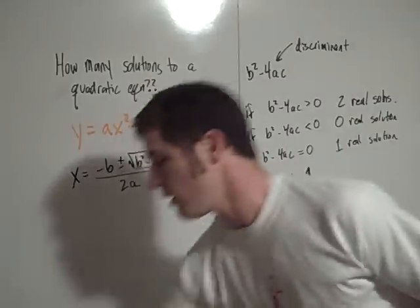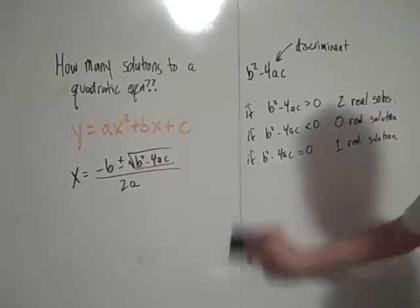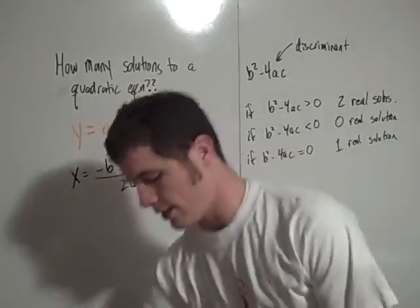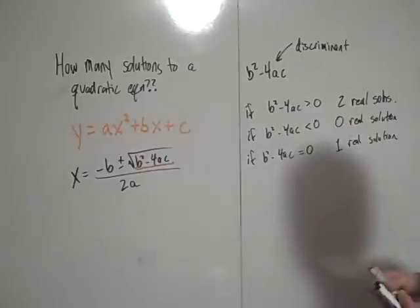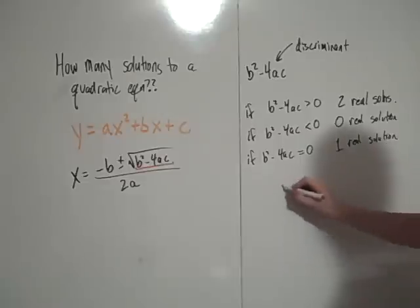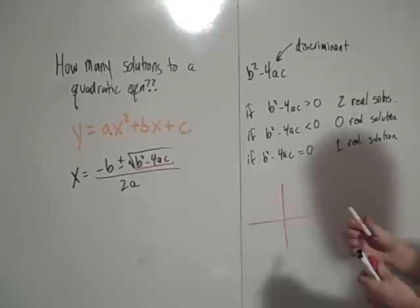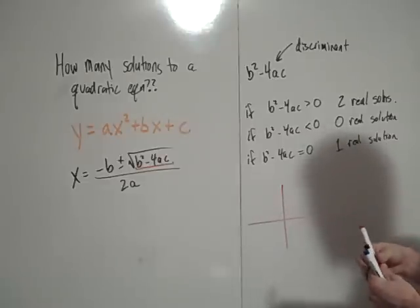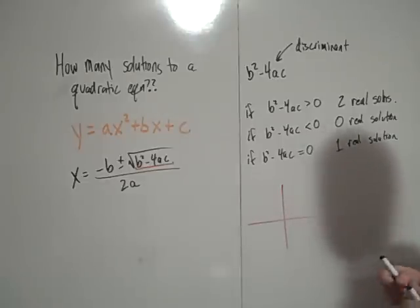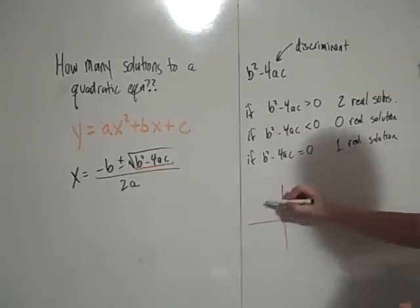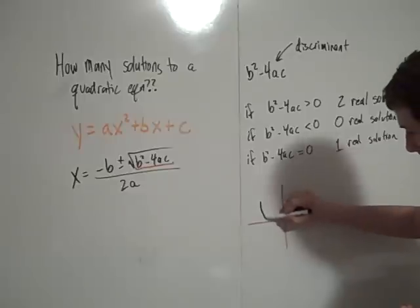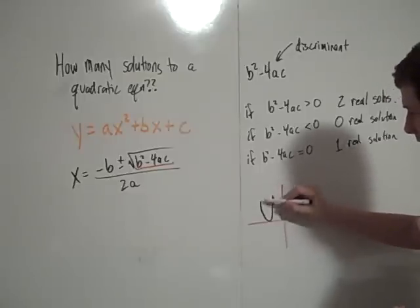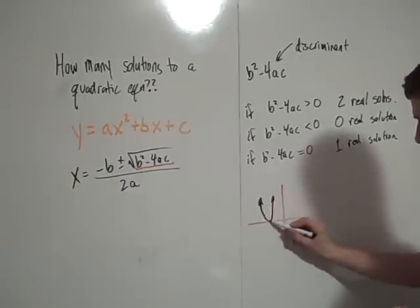And if b squared minus 4ac is equal to 0, then the graph has one real solution, because the vertex of the graph just touches the x-axis. And the solution is that point.